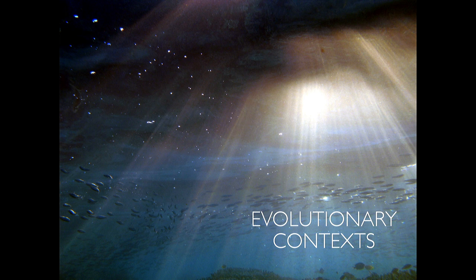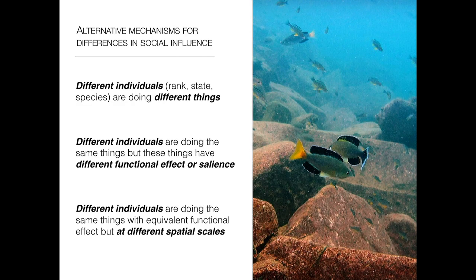Now to take it into the evolutionary context. We may have alternative mechanisms for differences in social influence. If we're asking questions of a system where we know there are differences in the mode of living, differences in the degree of sociality, and differences in the collective structure of different species, we can then ask: over the evolutionary time that has changed these species, which one of these aspects has changed? We can go in and interrogate the basic behavioral repertoire to ask, has that changed, leading to different emergent collective outcomes?